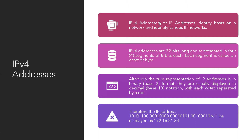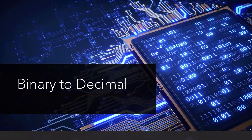IPv4 addresses identify a host on a network and identify various IP networks. These addresses are 32 bits long, represented in four segments of 8 bits each — usually called an octet or a byte. Although the true representation of IP addresses is in binary, they're usually displayed in decimal format for easier reading, with each octet separated by a dot. Later we'll go more in depth into the difference between binary and decimal.